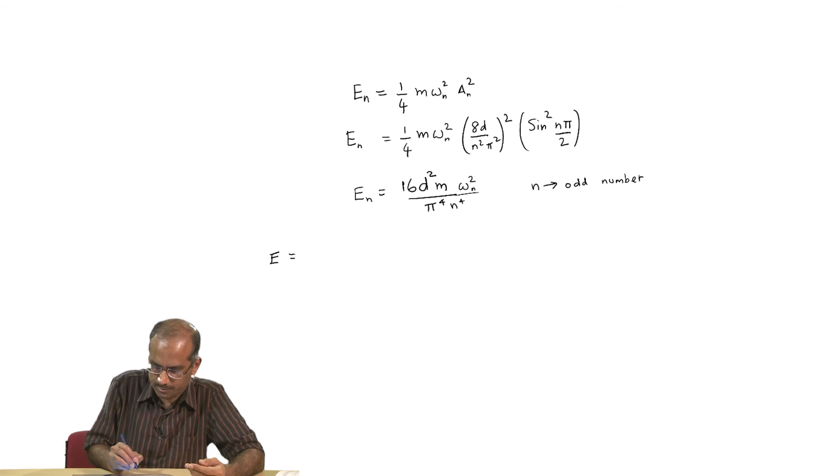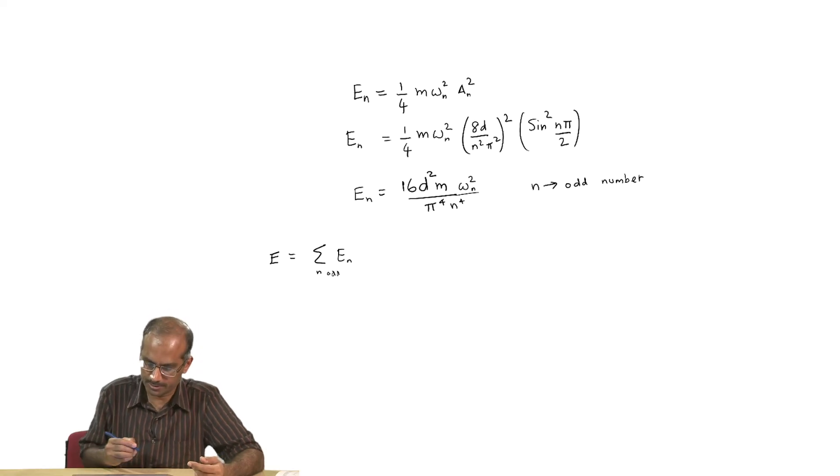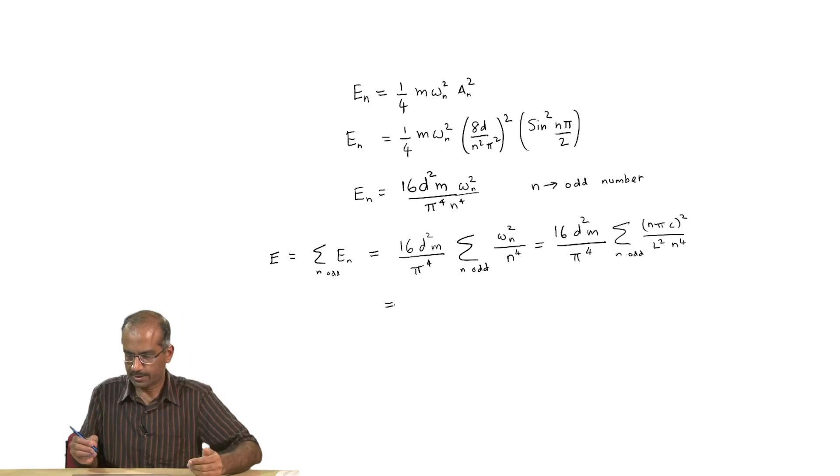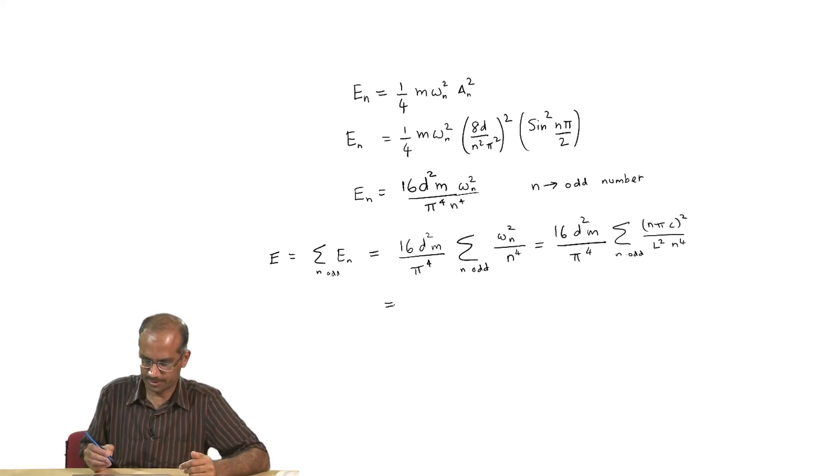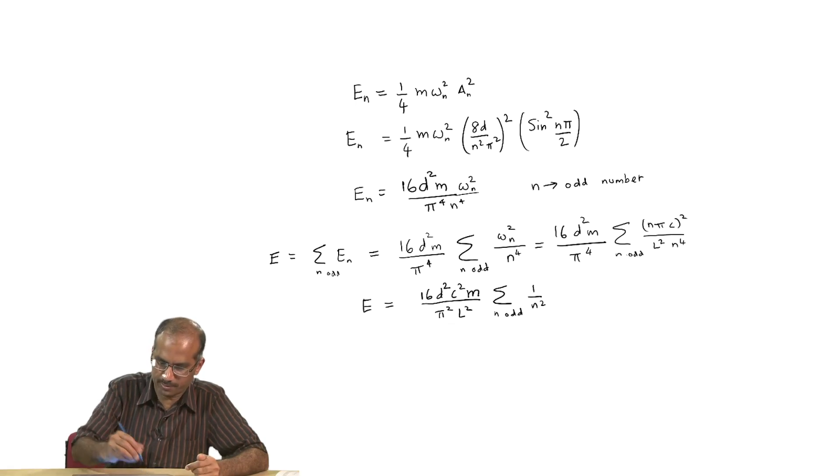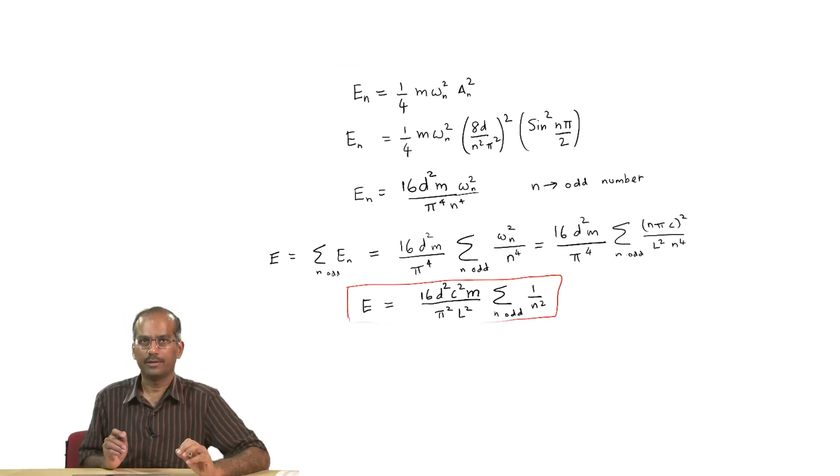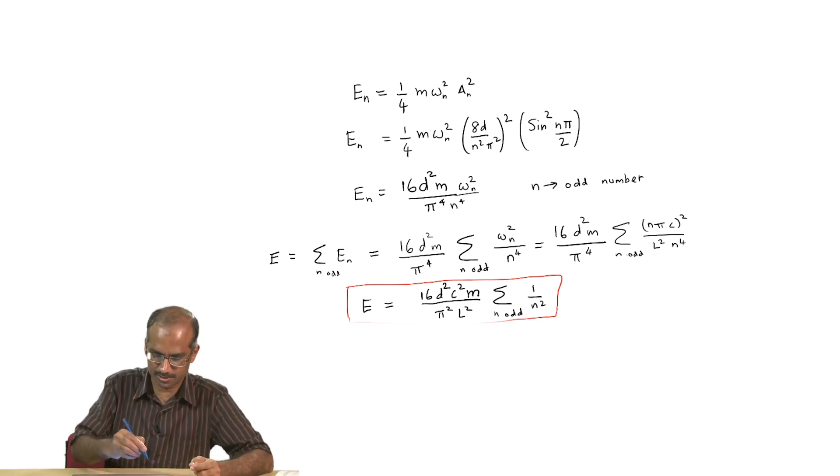The total energy would simply be sum over all the E_n's, and remember that n has to be odd numbers. Let me put that in here in the summation. I have also substituted for omega_n squared. Now after cancelling everything I am going to be left with the following expression. Here I have my final expression for energy which is in terms of a summation over odd integers. If you remember in the last module, we in fact worked out precisely this summation. Let me just quote the result for you.